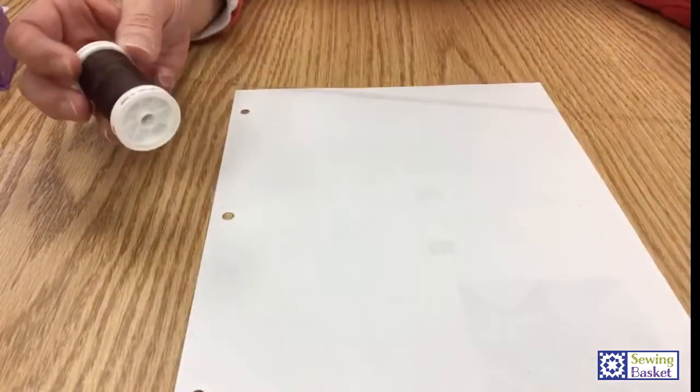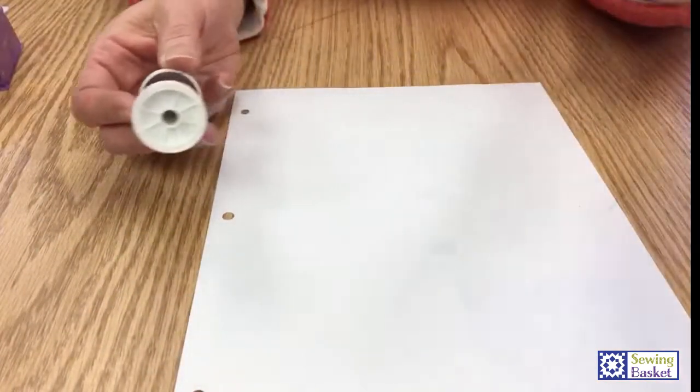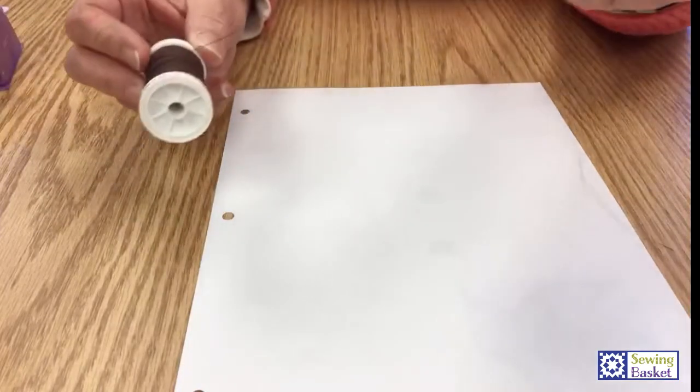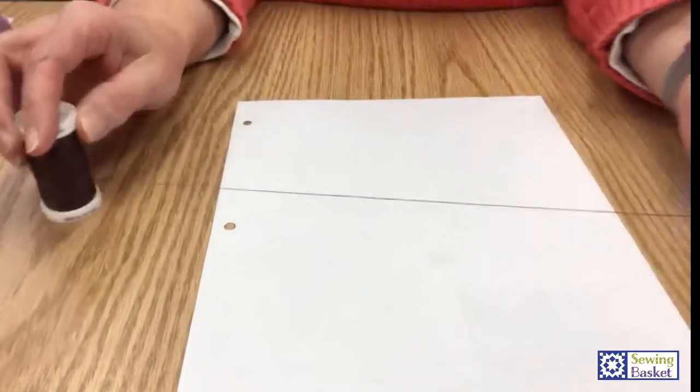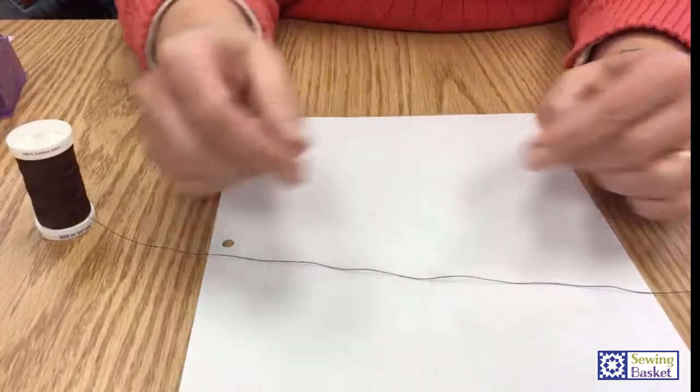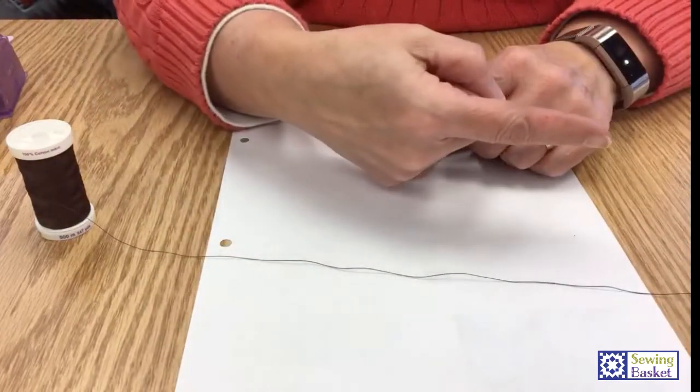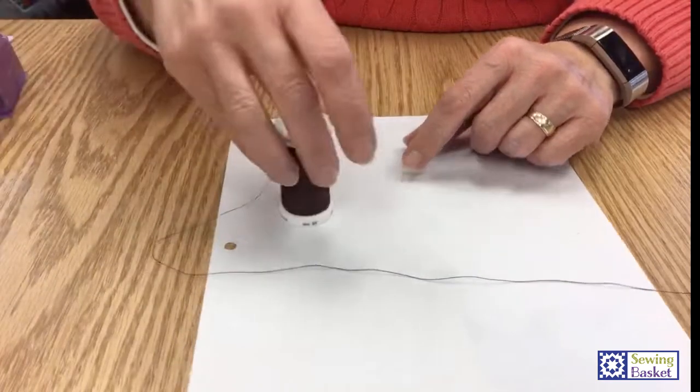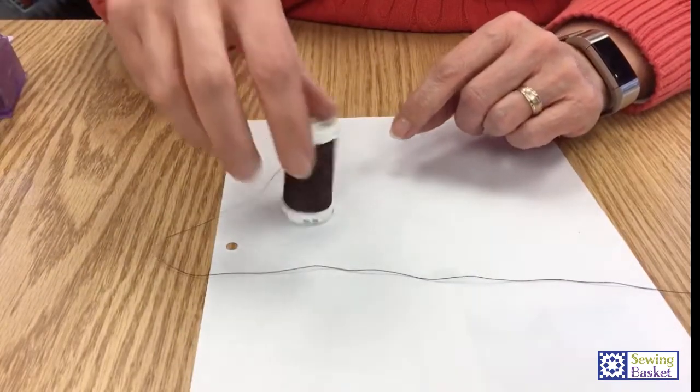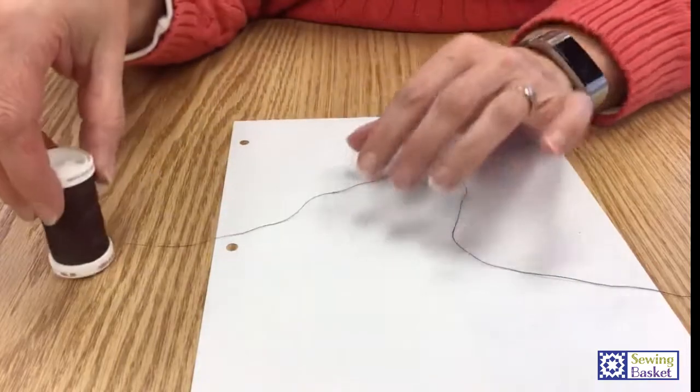Thread, especially cotton thread, is a series of fibers that are twisted together in the factory. They are twisted in a certain direction and then put on the spool in the same direction, so there's kind of a grain to thread.